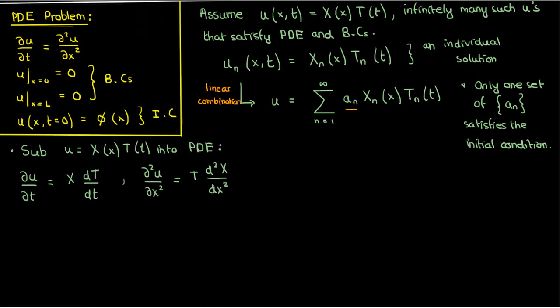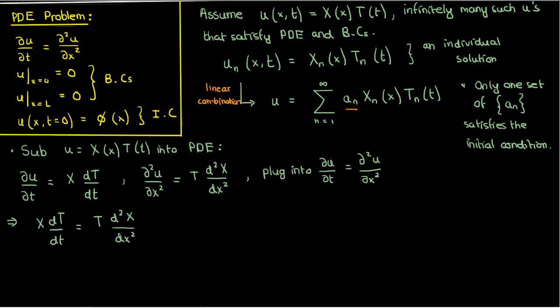Plugging these into our PDE, we get X times dT/dt equals T times the second derivative of X with respect to x. This is where the idea of separating variables comes in — we put all terms containing time on one side and all terms containing position on the other, effectively dividing both sides by X and then by T.